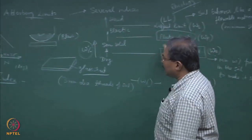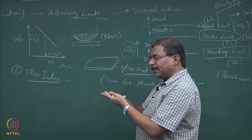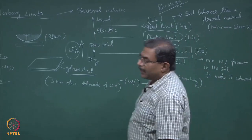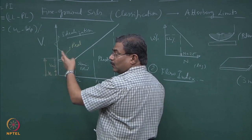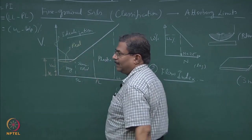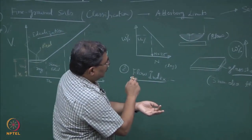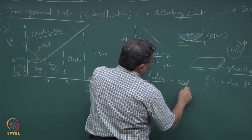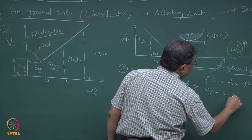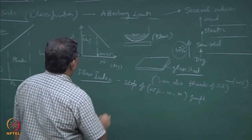You must have noticed: in plastic limit I was telling you to take soil and roll it into threads — so you are allowing very gentle deformation and heating from your fingers. Shrinkage limit is the one where the volume remains constant, there is no loss of moisture, soil remains fully saturated, and no air enters into the pores. These are the basic assumptions for defining the whole thing. The slope of this line is known as the flow index, normally defined as I_f.